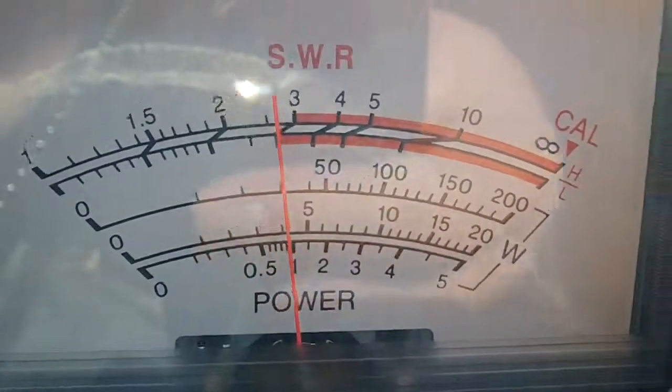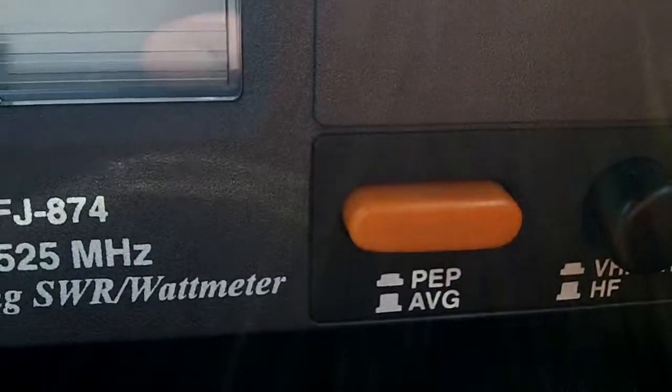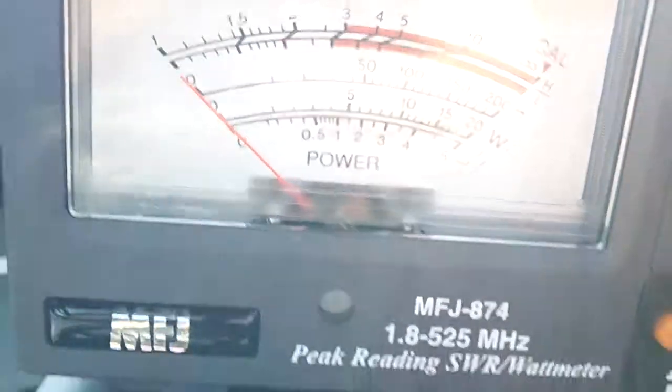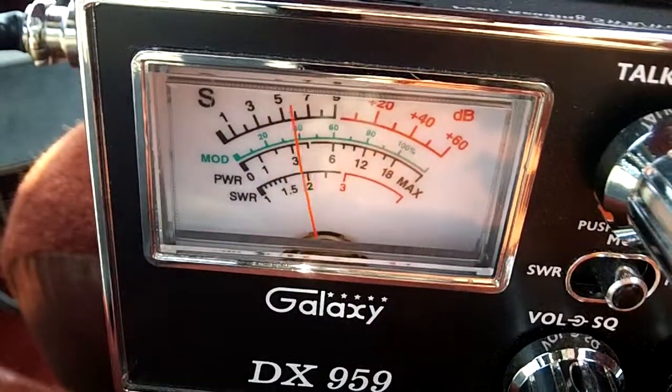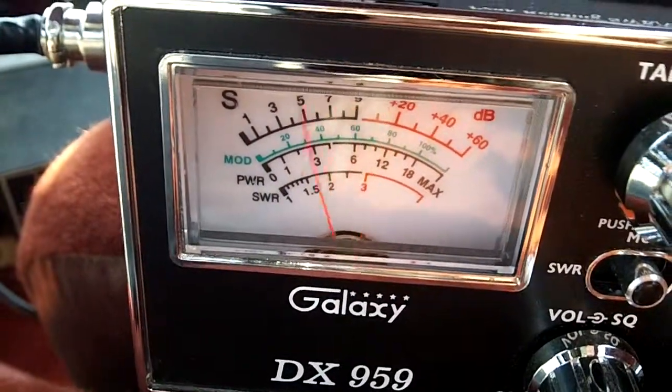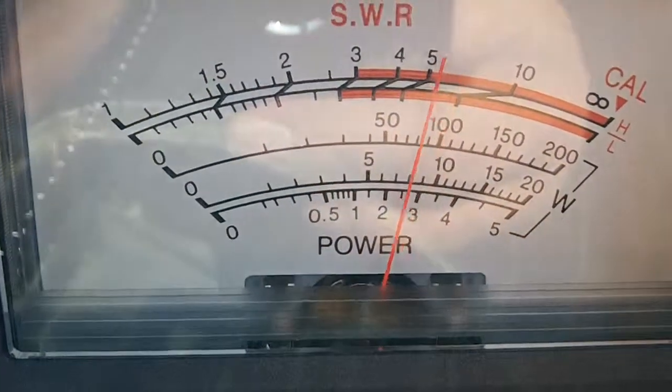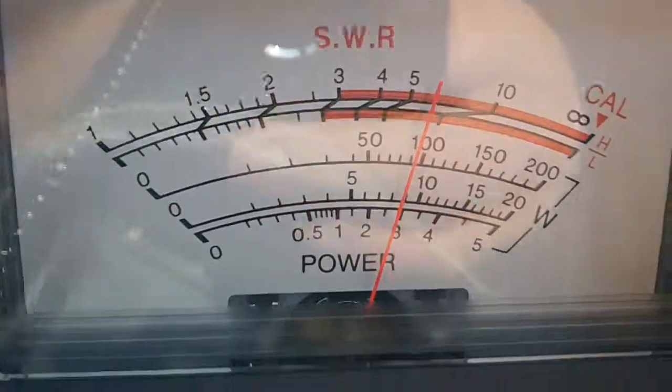Actually have reverse swing. Now if I put it on PEP, all of a sudden, still the same voice, still got forward modulation on the Galaxy, and also have forward modulation right here too on PEP.